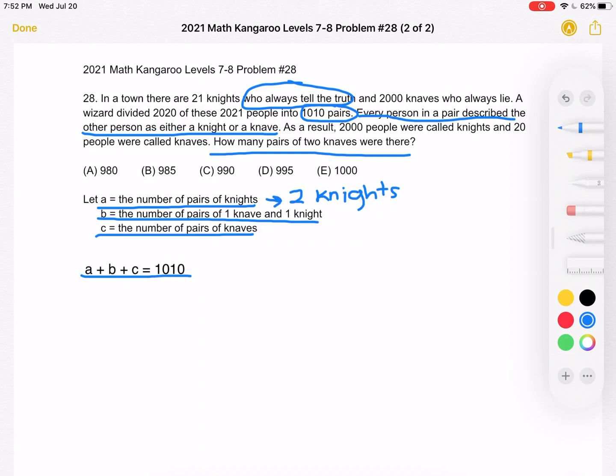For B, we have one knave and one knight. Keep in mind that we are told that knaves always lie. So when the knave looks at the person in their pair and they see a knight, they're going to lie and say that they saw a knave. However, the knight tells the truth. So the knight's going to look at the other person in their pair who is a knave and tell the truth and say that they saw a knave. So we're going to have the result that two people are called knaves from this pair.